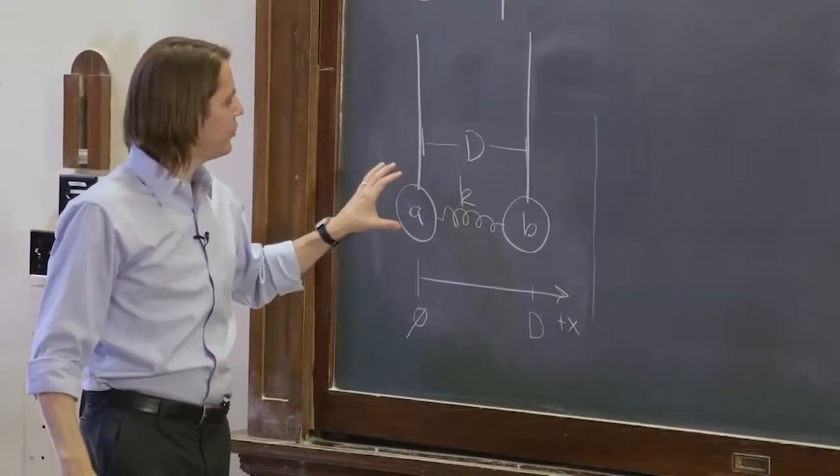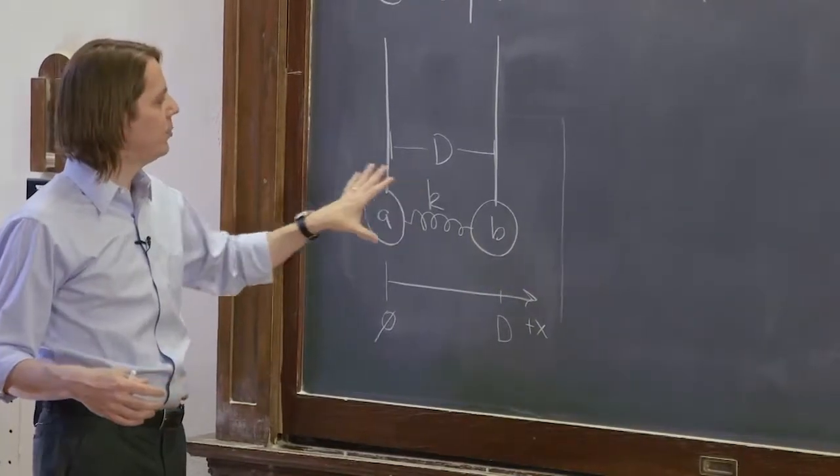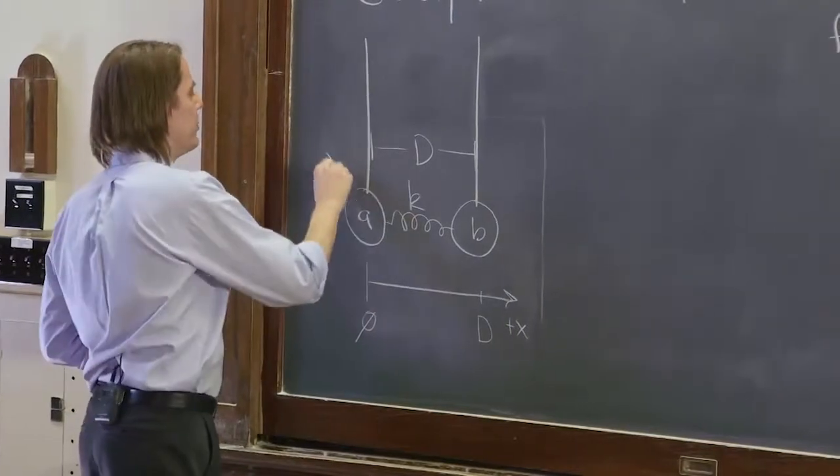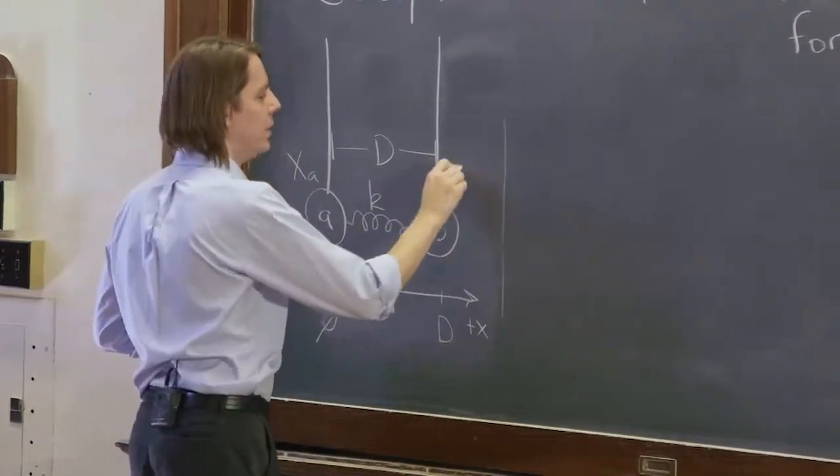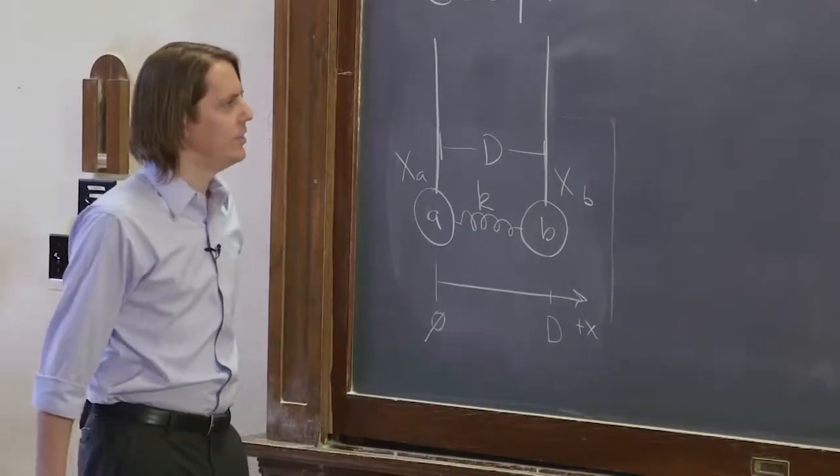So how do we want to treat these two oscillators? We want to apply the laws of motion. So we need to also give them their own variable to describe their position. So we'll call this one xA and this one xB. xA rests at 0, xB rests at x equals D.